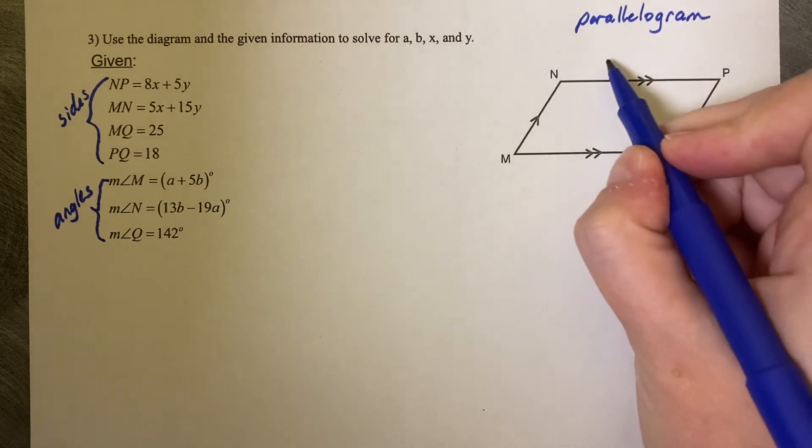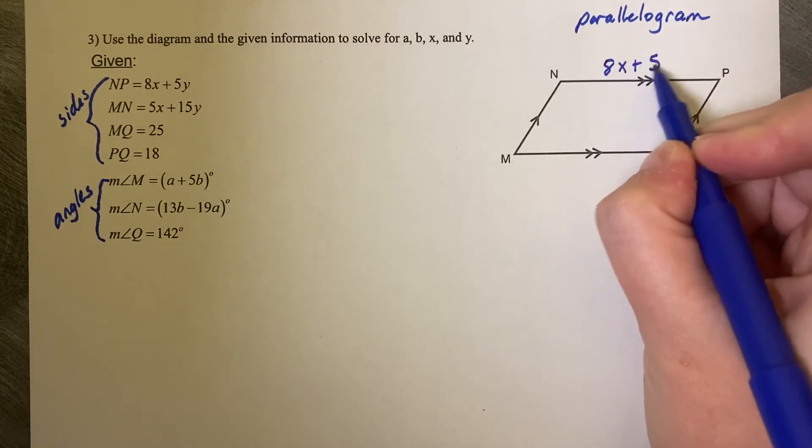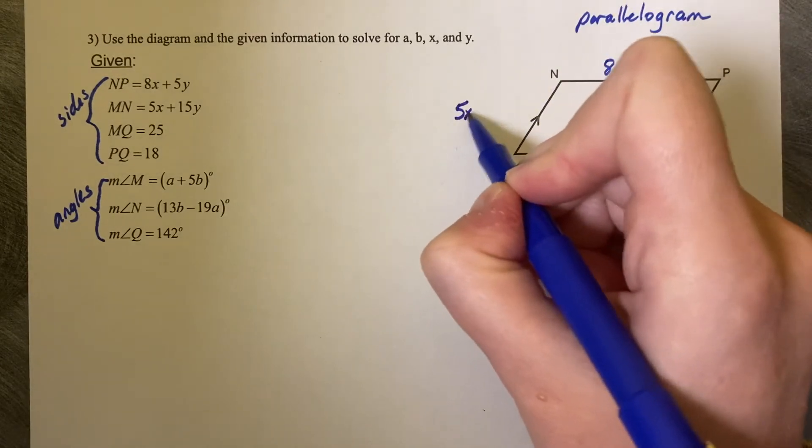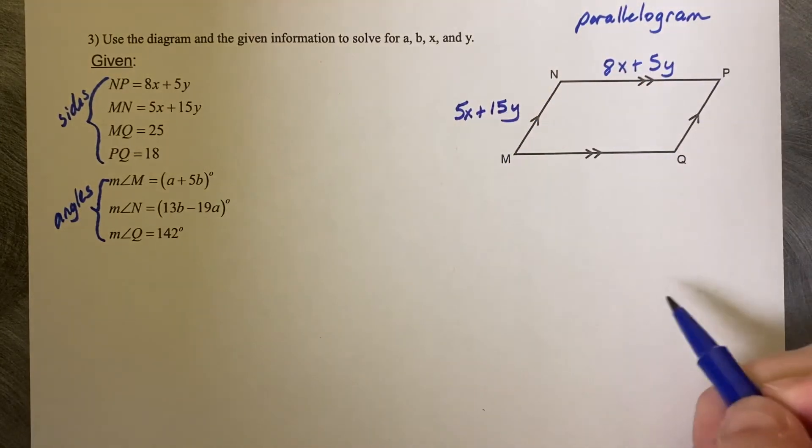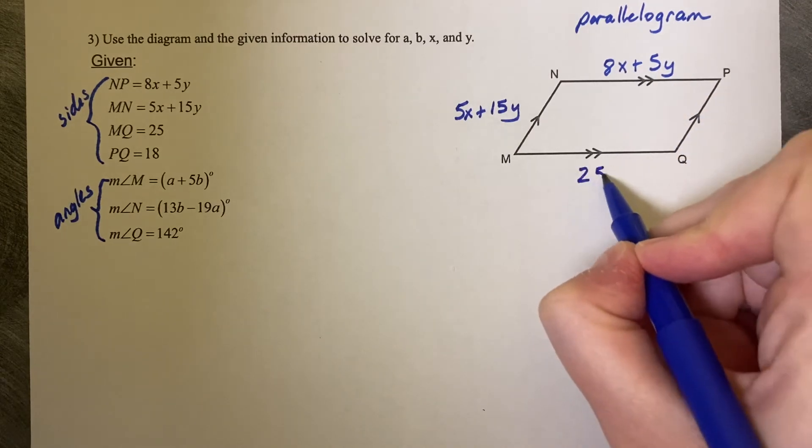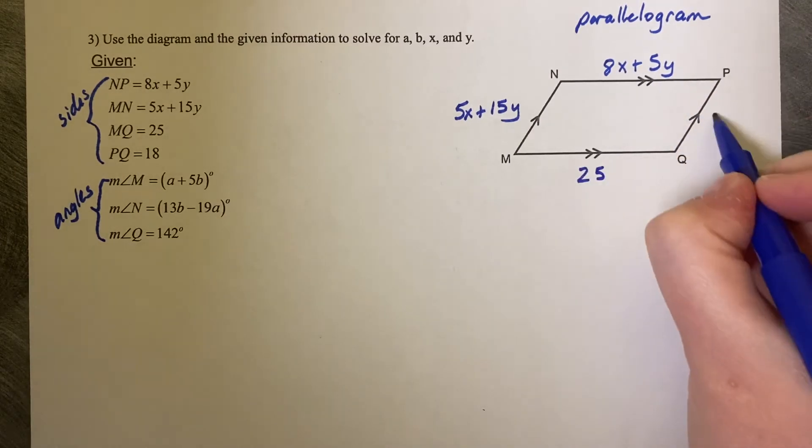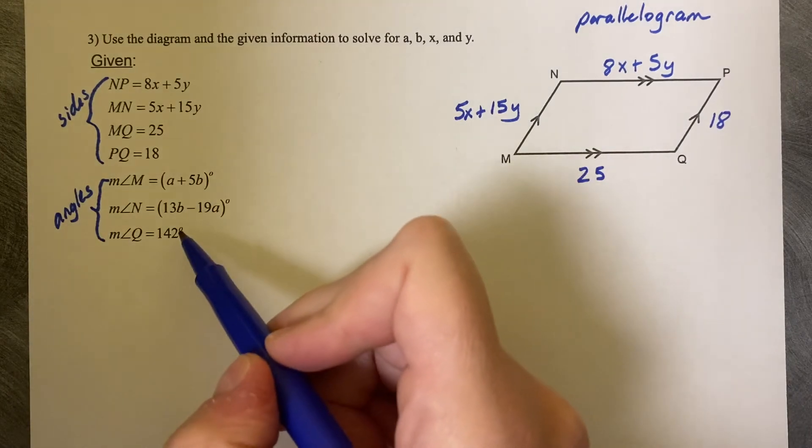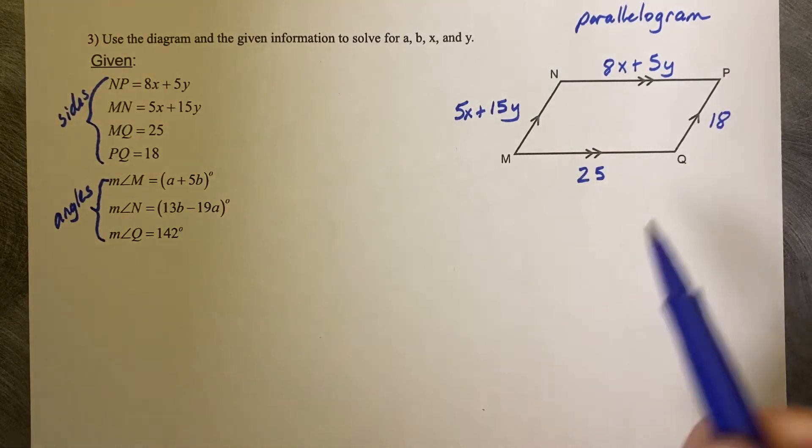So NP is 8X plus 5Y. MN is 5X plus 15Y. MQ is 25, and PQ is 18. And what you want to know is that you want to work with sides before you work with your angles. So work with one piece at a time.